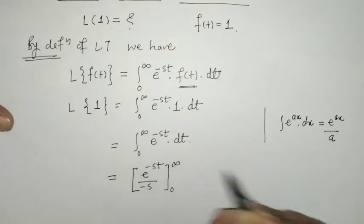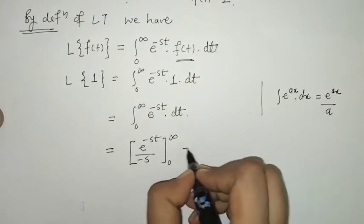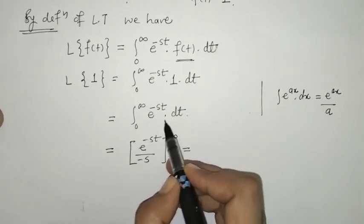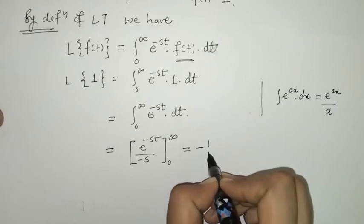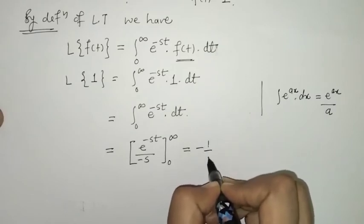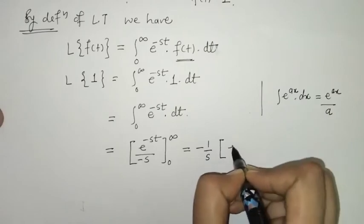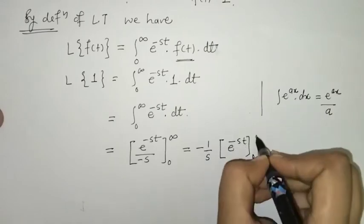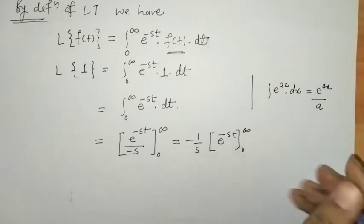This is within limits 0 to infinity. Since the integration is with respect to t, s is a constant, so we take minus 1 upon s outside. Now we have to put in the limits, t equals 0 to infinity.